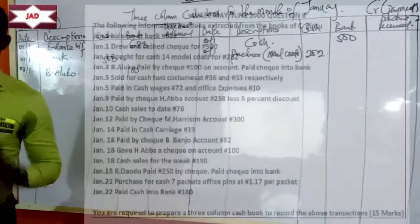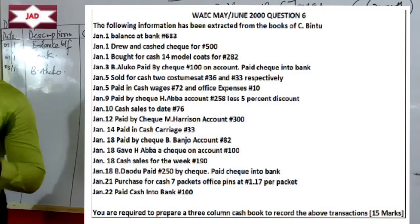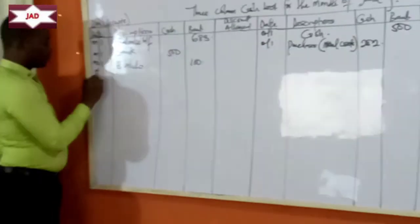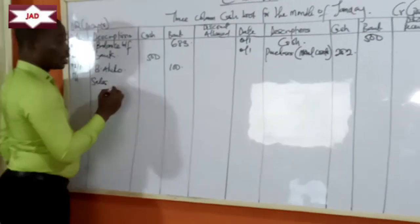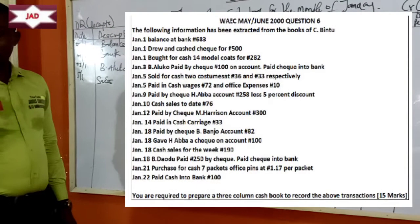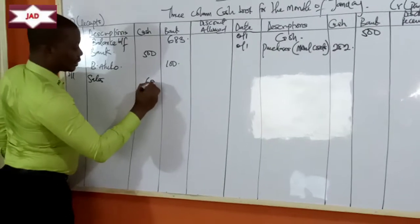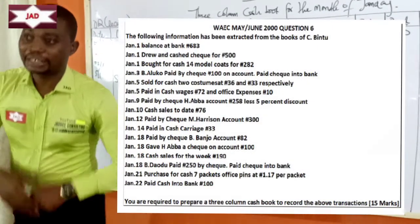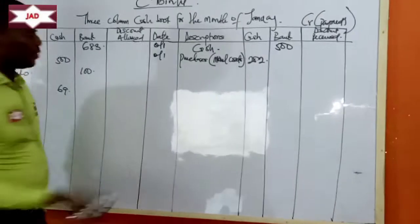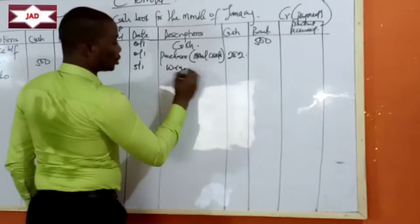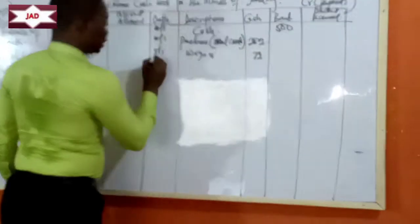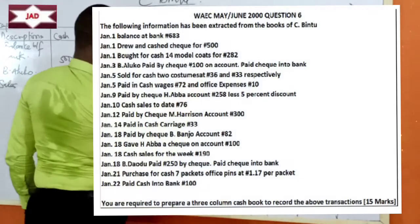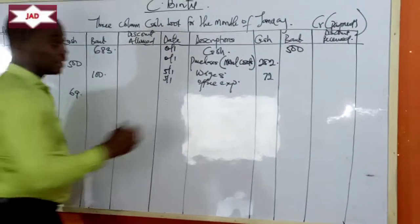We record January 3rd, Bialuko paid by check, in the bank column for 100 Naira. The next entry is January 5th: sold for cash to customers at 36 Naira and 33 Naira respectively. We're selling two items: 36 plus 33 equals 69 Naira. When we sell, we receive cash — that's a receipt. January 5th, sales, cash column: 69 Naira. Also January 5th, paid in cash wages 72 Naira and office expenses 10 Naira. We're paying — that's payments in cash. We record wages 72 Naira in cash and office expenses 10 Naira in cash on the payment side.